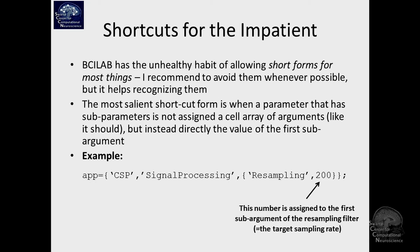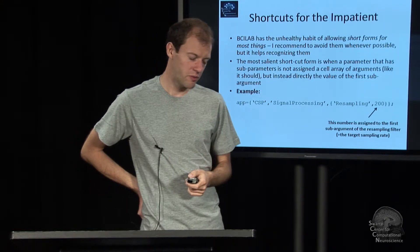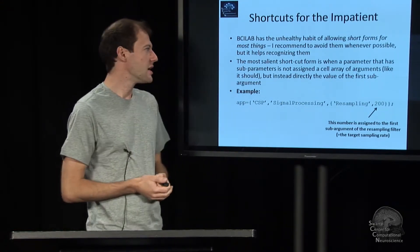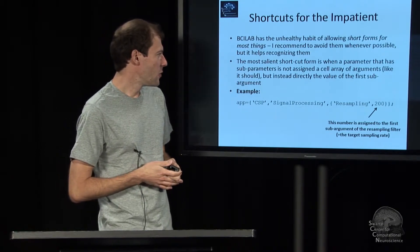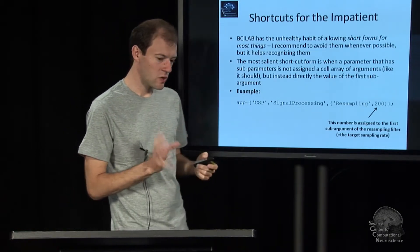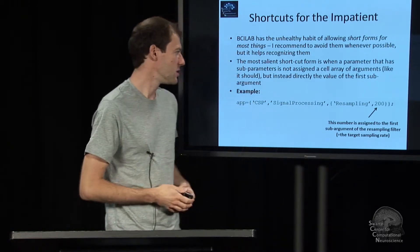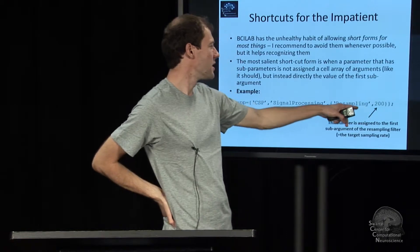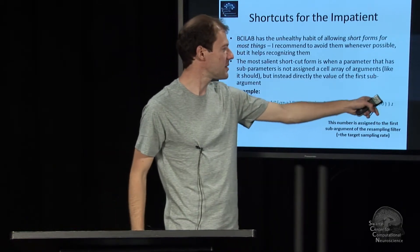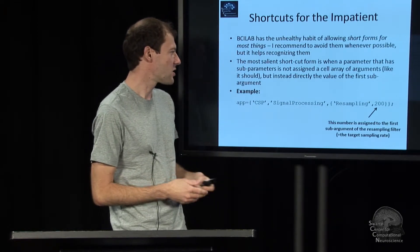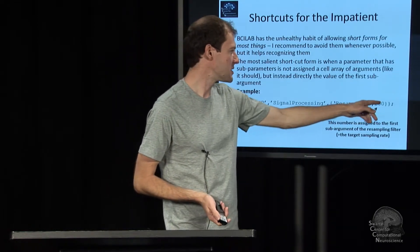There's a few shortcuts to make this whole specification a bit shorter. The idea is when you want to override just the first argument of some function like a filter, you can, instead of going on with a cell array where you say I want to override the sampling rate and set it to 200 in the resampling parameter, you can also directly put that value here.